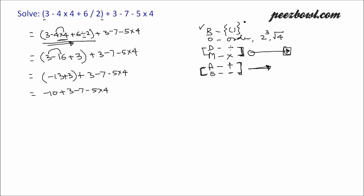Now we have subtraction, addition, subtraction, subtraction, and multiplication remaining. The highest priority among these operations is multiplication. So let us work on that first: minus 10 plus 3 minus 7 minus 5 multiplied by 4 is 20. Now we have addition and subtraction only.